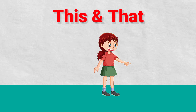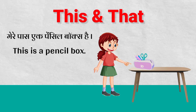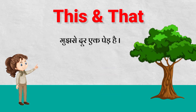Let's take another example. Mere paas ek pencil box hai. So what will I write? I will write 'This is a pencil box', kyunki pencil box mere paas hai. Aur jo paas mein hota hai, tab hum use karte hai 'this'. Ab mere se door ek ped hai. So what will I write? 'That is a tree.' Kyunki wo ped hai aur woh mere se door hai. So jab door koi chiz hoti hai, toh hum use karte hai 'that'.